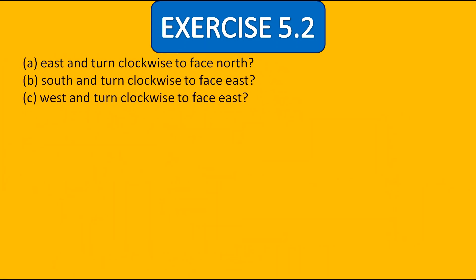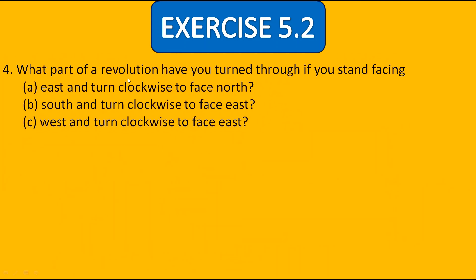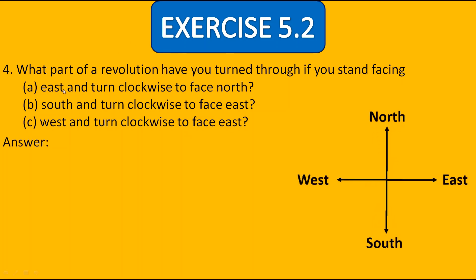Now let's move to the fourth question: What part of a revolution have you turned through if you stand facing east and turn clockwise to face north? Using the direction map, going from east clockwise to north — the clock is clearly divided into four parts and we are making three parts — so the answer is three fourths of a revolution.